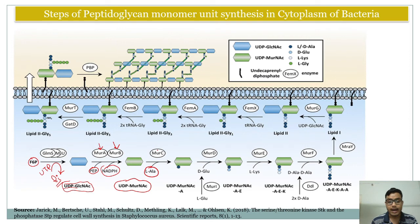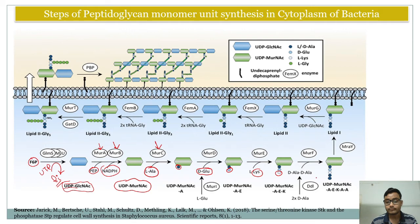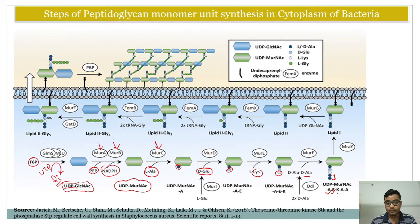After UDP-N-acetylmuramic acid is formed, L-alanine is added by MurC and MurD enzymes, attaching alanine to the UDP-N-acetylmuramic acid. Then glutamine is attached with alanine, followed by lysine attached to glutamine. Next, two alanine residues are joined together to this lysine residue, building the chain step by step.